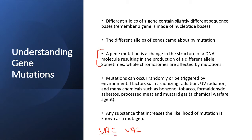Most of the time, you would also find that gene mutations are caused by environmental factors like ionizing radiation and UV radiation. Smoking is also a source of gene mutations. Exposure to a compound called benzene — a petrochemical compound very common in petroleum — is known to be a mutagen and one of the most important pollutants in the world, known to cause cancer. Formaldehyde, asbestos, and in some cases processed meat and mustard gas have also been identified as factors that cause mutations, and they are called mutagens.